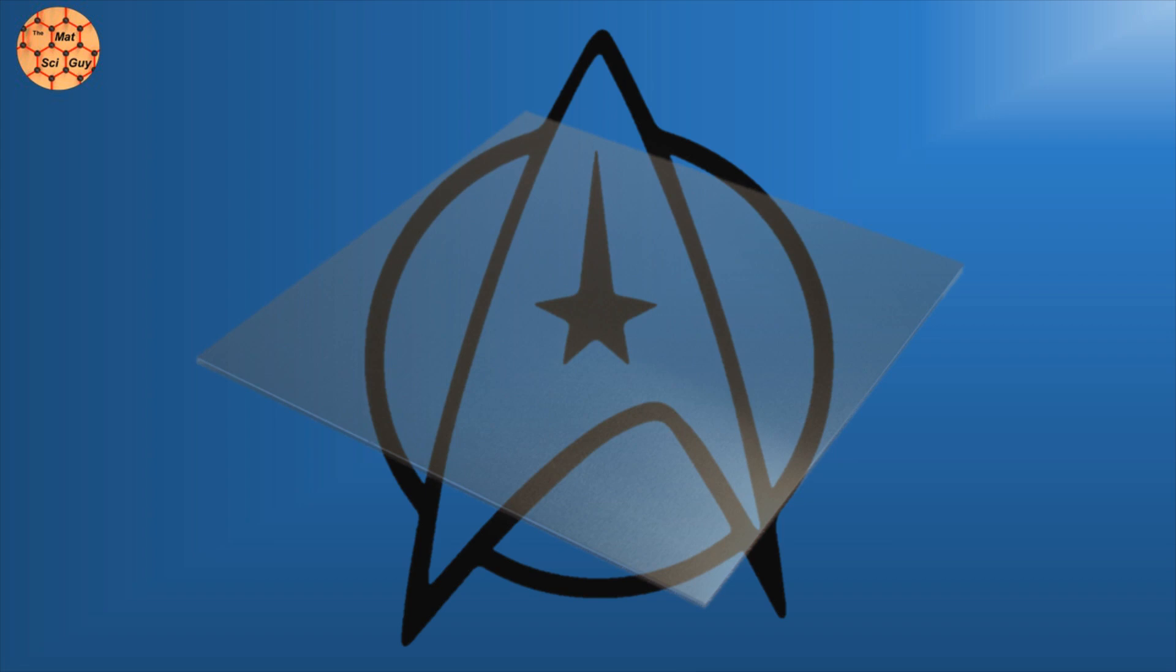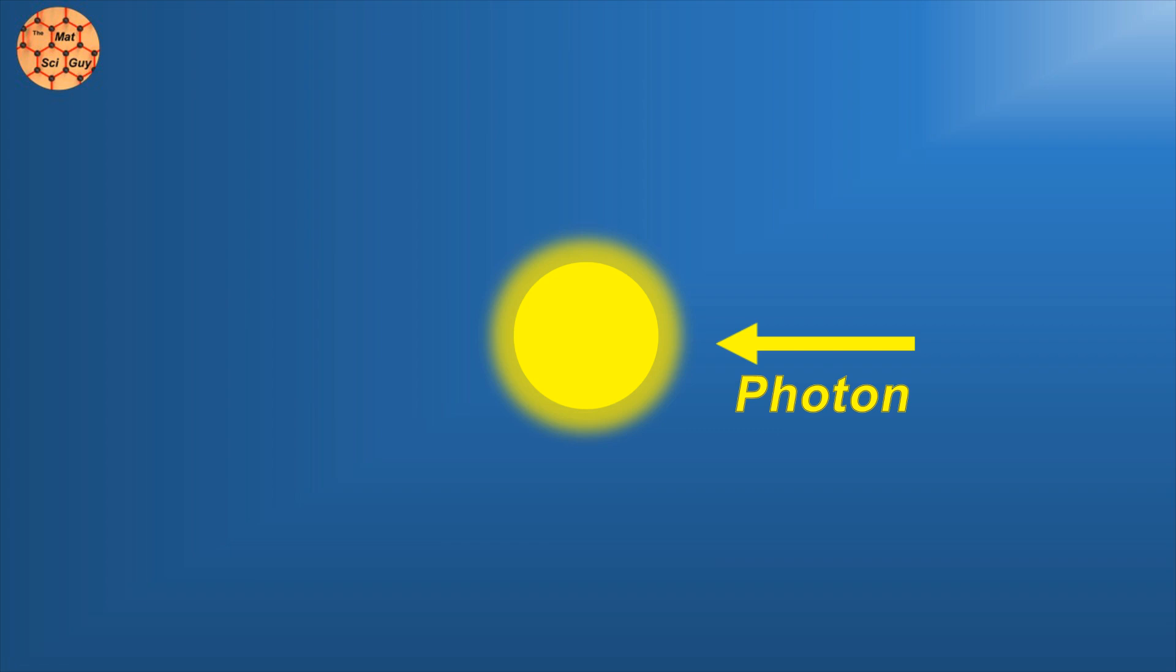To understand if transparent aluminum is possible, we need to understand why things are transparent in general, and it's not always super straightforward. Light is carried by photons, and for something to be considered transparent, there basically needs to be no major obstacles for these guys.